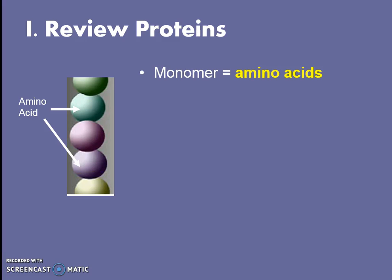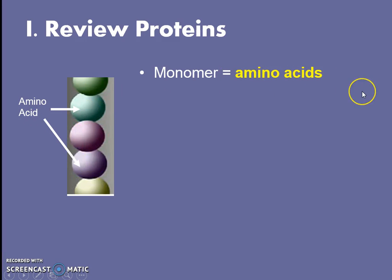Before we do this, since we're talking about protein synthesis, we need to review proteins, our macromolecule category. Just like all macromolecules, they are made up of building blocks called monomers. Specifically, those building blocks are called an amino acid. This is something you will need to know — that is the name of the building block for proteins.